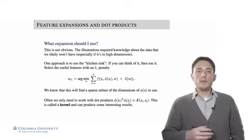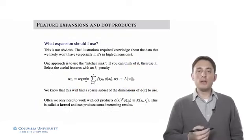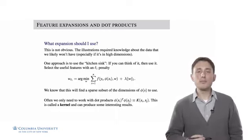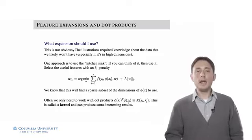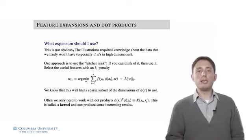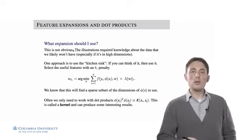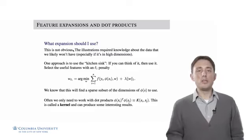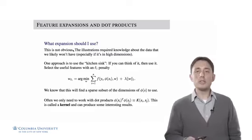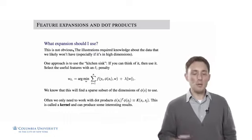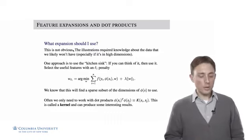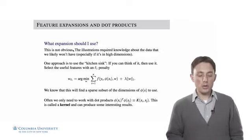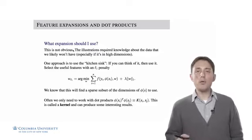To introduce some notation and give some intuitions — one for regression, another for classification — you've probably already thought: it's nice that I know the answer. I know the mapping in those two cases because I generated the data. But in your own problem, which expansion should you use? What should you define this phi function of inputs x to be? In reality, there's not an obvious answer to that question, as the illustrations required knowledge about the data that we're probably not going to have in practice, especially if the data is in higher dimensions than two or three.